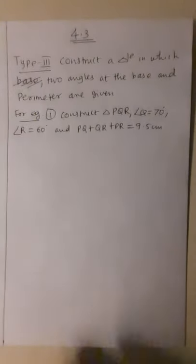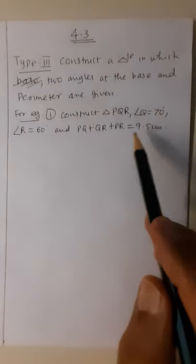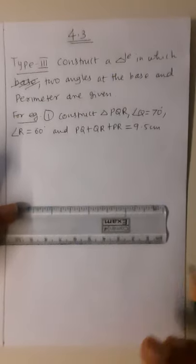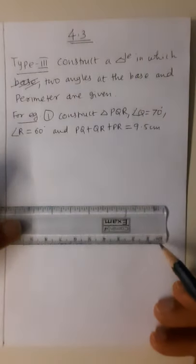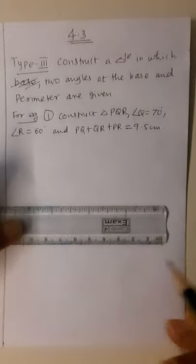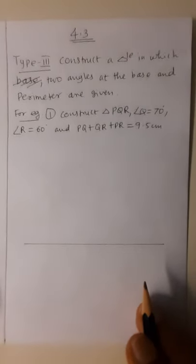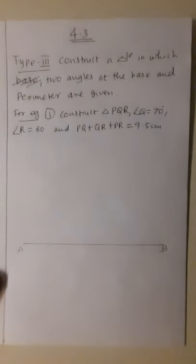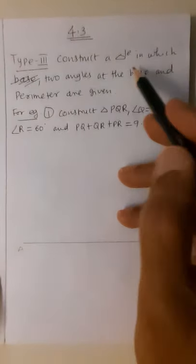First of all, we draw a segment equal to the perimeter — 9.5 centimeter. I mark one dot at zero and another at 9.5, then join them to get the segment. We name it AB, not PQ, because this is not the base — segment AB is entirely equal to the perimeter of the triangle, 9.5 centimeter.